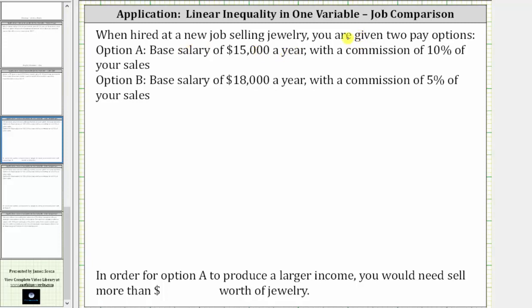When hired for a new job selling jewelry, you are given two pay options. Option A: a base salary of $15,000 a year with a commission of 10% of your sales, or option B: a salary of $18,000 a year with a commission of 5% of your sales.